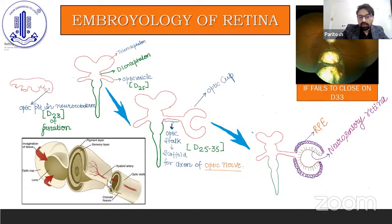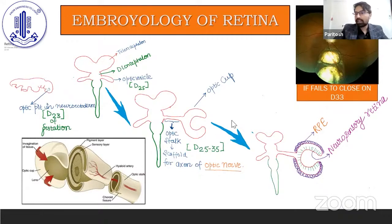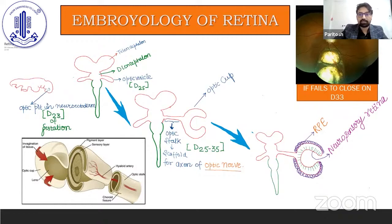Here I would like to mention some clinically relevant points. If at around day 33 the ventral part of the optic cup, which receives the hyaloid artery, does not close, it forms an anomaly called fundal coloboma, which we frequently encounter in clinical practice.